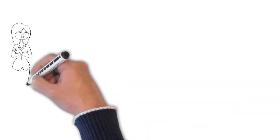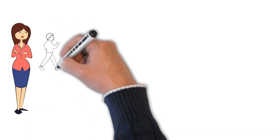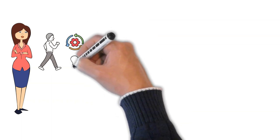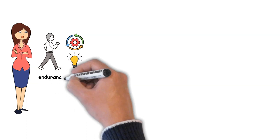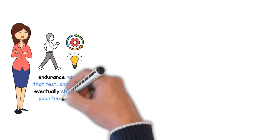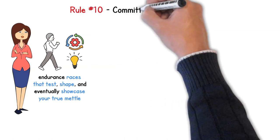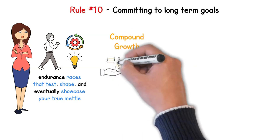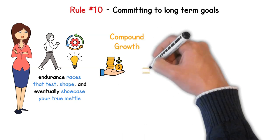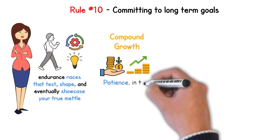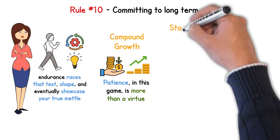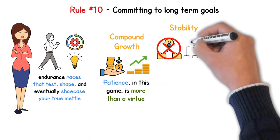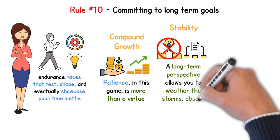Now for rule 10. Picture this: you're gearing up for a race. You could go all out in a 100-meter dash, but building wealth? That's more like an ultramarathon. While those short sprints give adrenaline kicks, it's the endurance races that test, shape, and eventually showcase your true mettle. Here are the benefits of committing to long-term goals. Compound Growth: as we discussed before, time can be a financial ally. The longer you let your investments grow, the bigger they can become. Patience in this game is more than a virtue, it's a strategy. Stability: short-term strategies often come with higher risks. A long-term perspective allows you to weather the storms, absorb shocks, and emerge stronger.